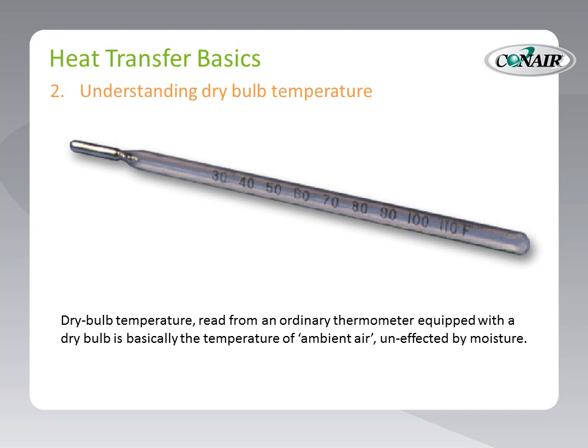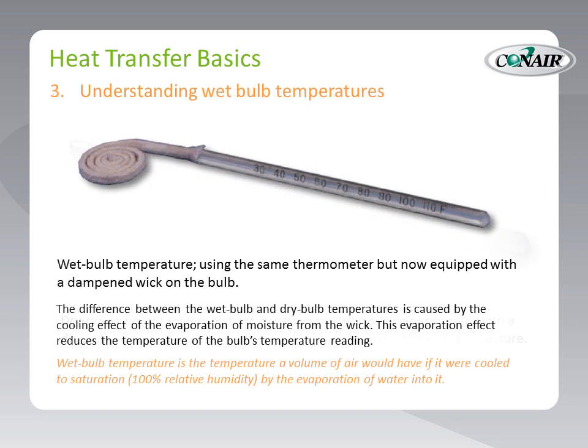We will also need to understand both dry bulb and wet bulb temperatures. Dry bulb temperature, as the name suggests, is measured with a thermometer that has a dry bulb and represents the ambient temperature without any evaporation influence. Wet bulb temperature, also as the name suggests, is measured with a bulb of the thermometer covered in a dampened wick. As the water evaporates from the wick, the latent energy required for that evaporation cools the thermometer bulb. The difference between dry and wet bulb temperatures represents the ability of the ambient air to accept additional moisture. The wider the gap between dry and wet bulb temperatures, the more moisture the air has the ability to accept.